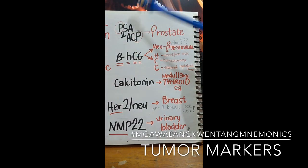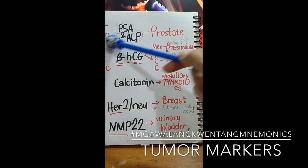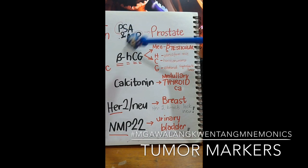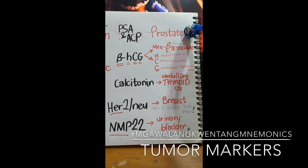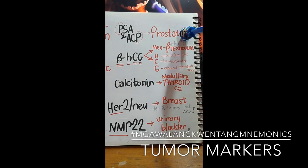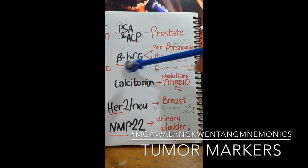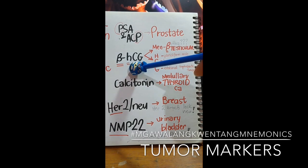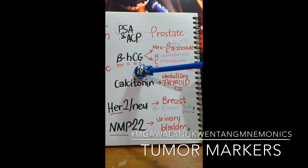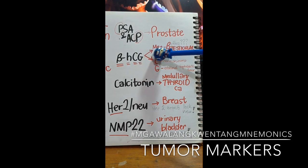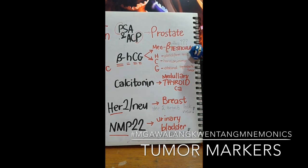We have PSA — prostate-specific antigen — and ACP, which is acid phosphatase. Both of these substances contain the letter P in their names, so we can associate that with the P-gland — the prostate — for male prostate cancer. Then we have beta-HCG, beta human chorionic gonadotropin. When this is requested from male patients, it indicates testicular cancer.